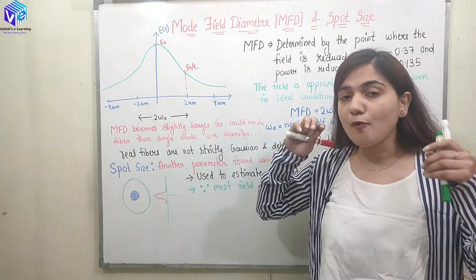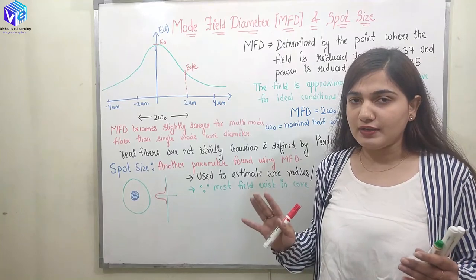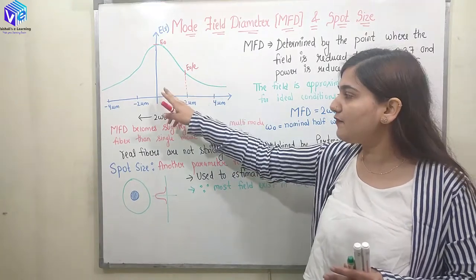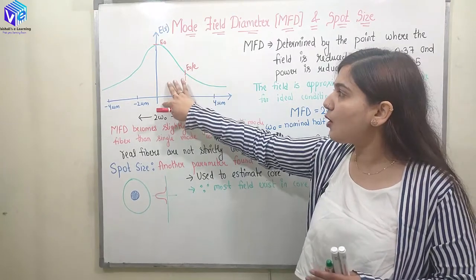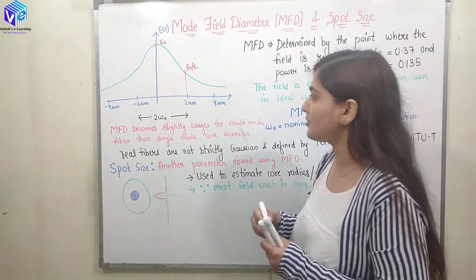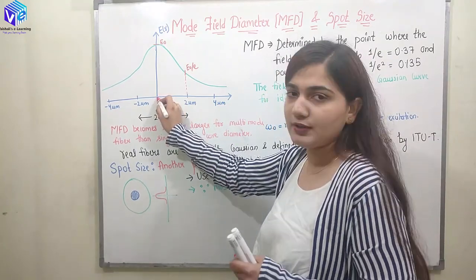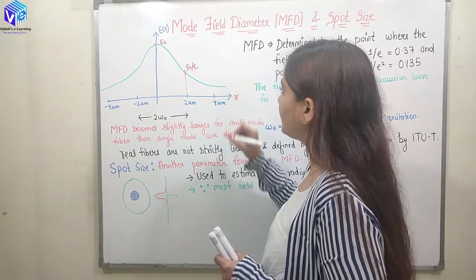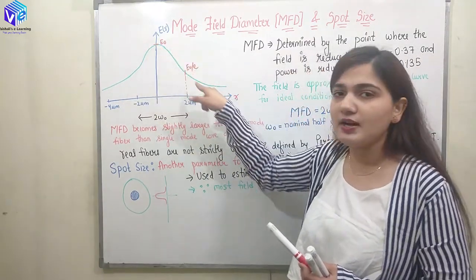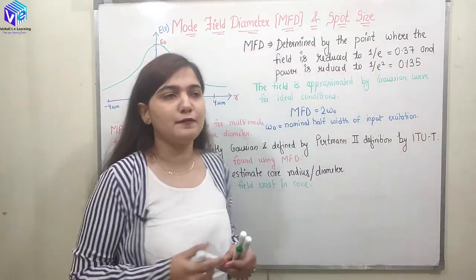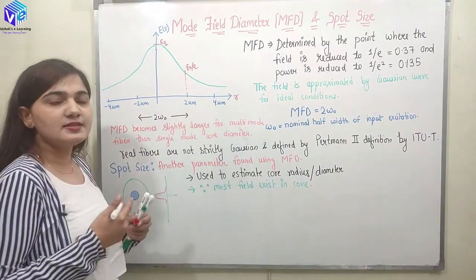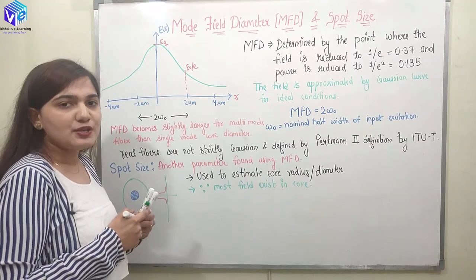When I am operating at or below the cutoff wavelength, I will be following the Gaussian curve for the field. On the y-axis we have E(R) and on the x-axis we have the distance from the center — the distance from the axis of the core. I have drawn a Gaussian curve, which is a bell-like curve. It has a maximum at the center represented as E₀, and on both sides it decays exponentially, looking like a bell. So it is called the Gaussian curve.